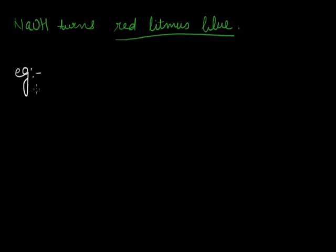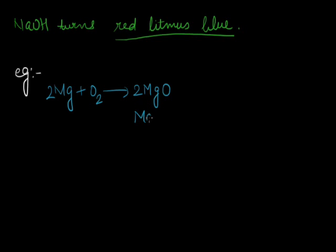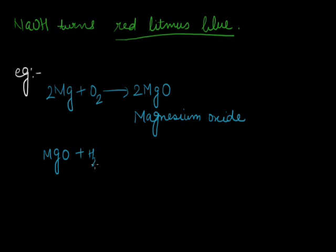Considering the reaction of magnesium with oxygen: magnesium reacts with oxygen to form magnesium oxide, MgO. Like Na₂O (sodium oxide), MgO reacts with water to form magnesium hydroxide.